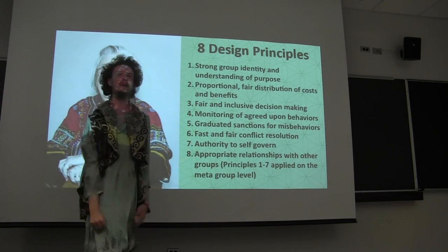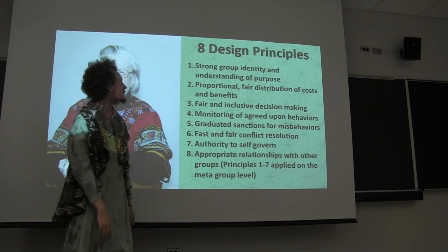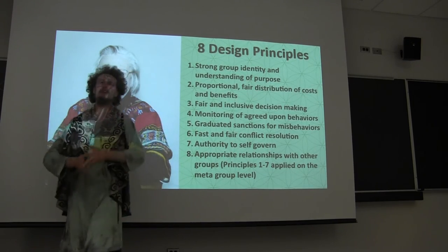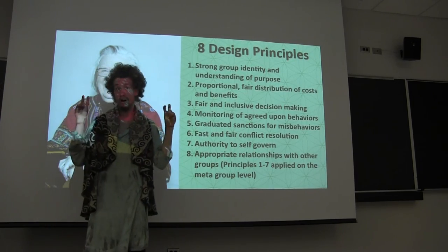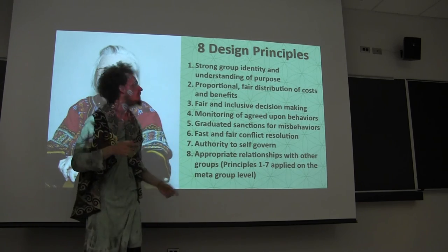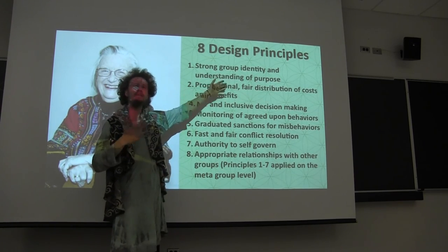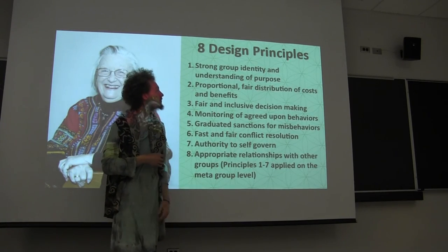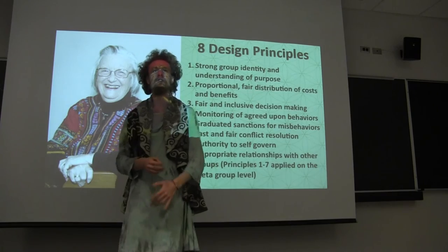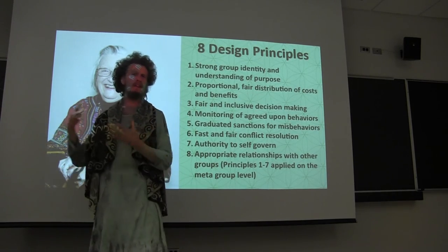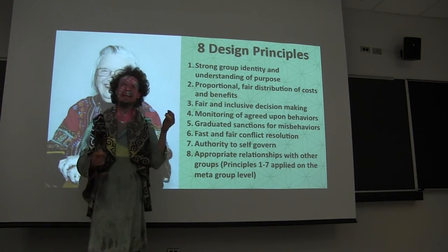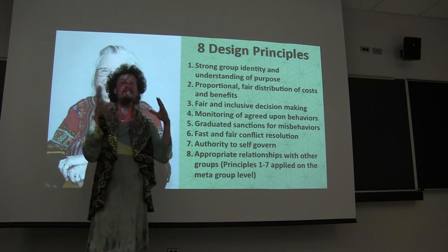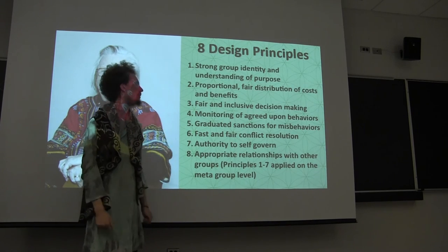The first design principle is strong group identity and understanding of purpose. If we go back to things that people call communal houses, like a nursing home, this is going to be lacking. Number two: proportional fair distribution of costs and benefits — those that are working the most should be getting the most out of it, and vice versa. But also equitable distribution of costs and benefits — there's equality and there's equity, and you need a little bit of both.